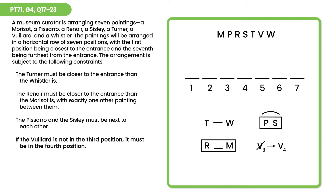A rule that goes from negative to positive means that at least one of those two things has to happen — if one of them doesn't, then the other does. So what that's telling us is that V must be either in the third position or the fourth position.